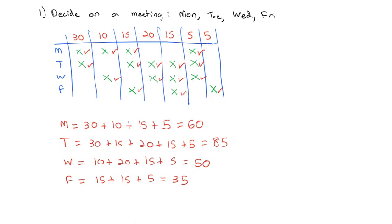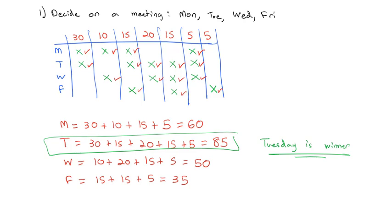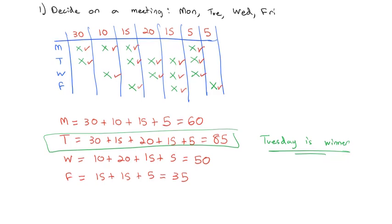We can look at this pretty quick and say it seems Tuesday has the most votes. So Tuesday is the winner of this approval vote. It seems like a pretty straightforward way to get a result and a winner. It's actually really easy to calculate and count up, especially if you're using a computer.